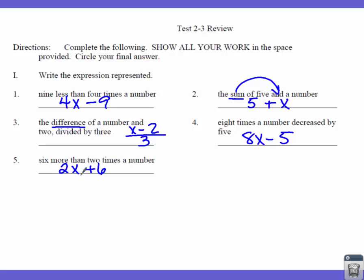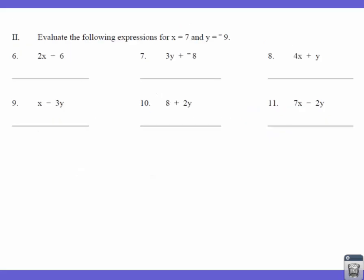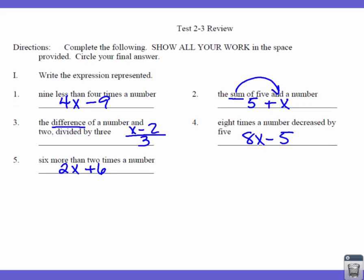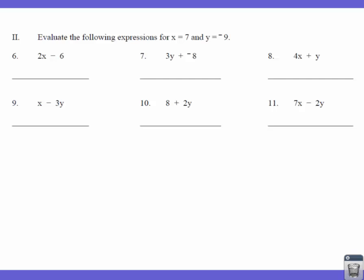So there's the section on reading and writing algebraic expressions. The next section on the test is evaluating expressions for given values. It says evaluate the following expressions for X equals 7 and Y equals negative 9. We are allowed to use our calculator, so you should get your answer correct, but you do have to show your work. What I consider work is plugging in your values and then coming up with an answer.